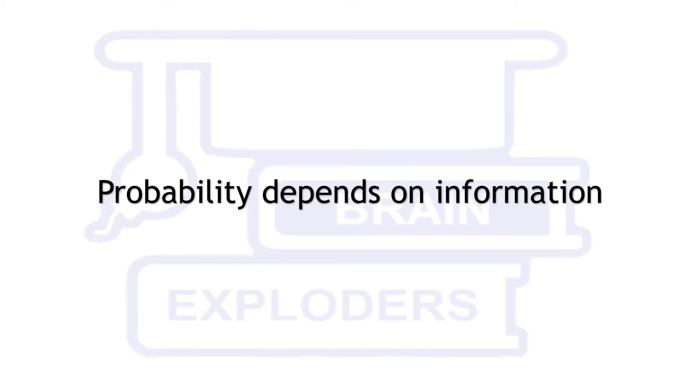This problem proves the fact that probability depends on given information. If we know everything about an event then according to us its probability is either 1 or 0.